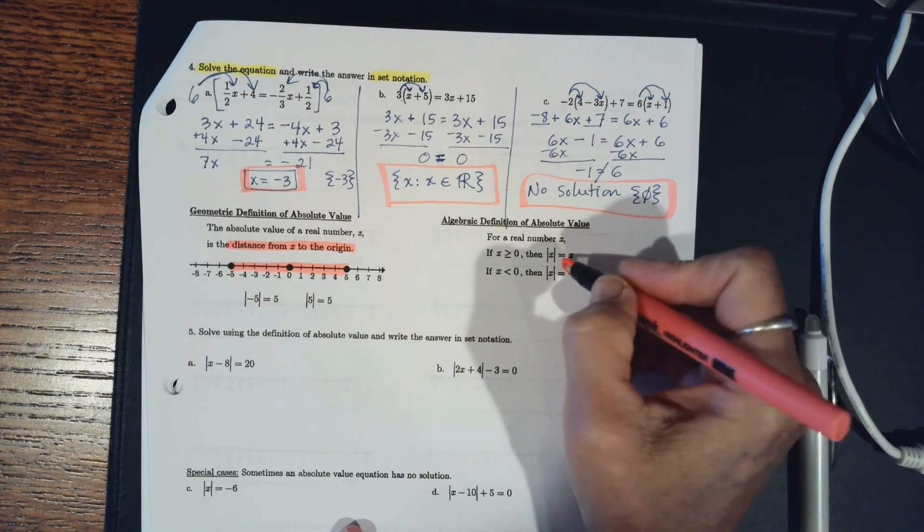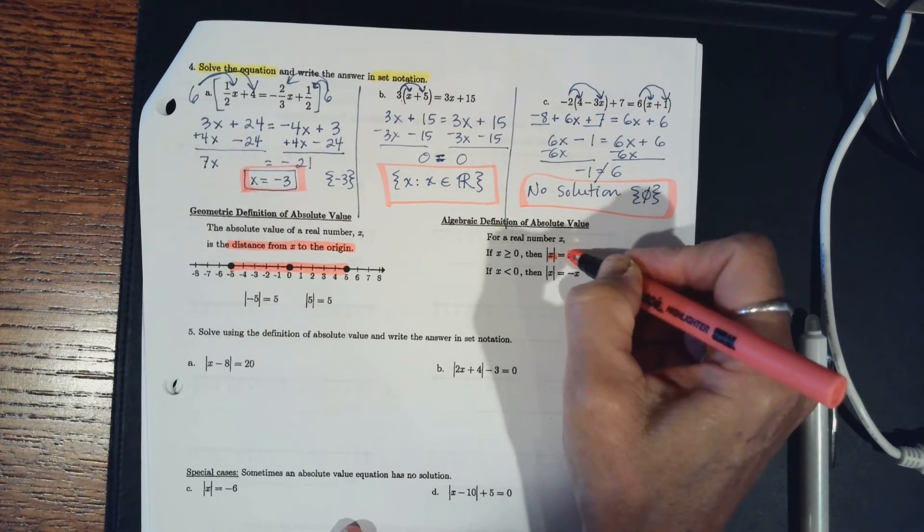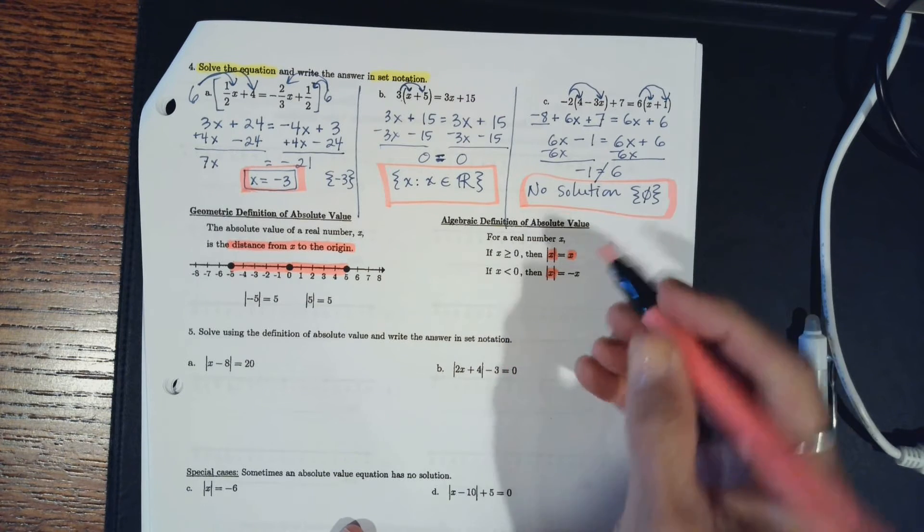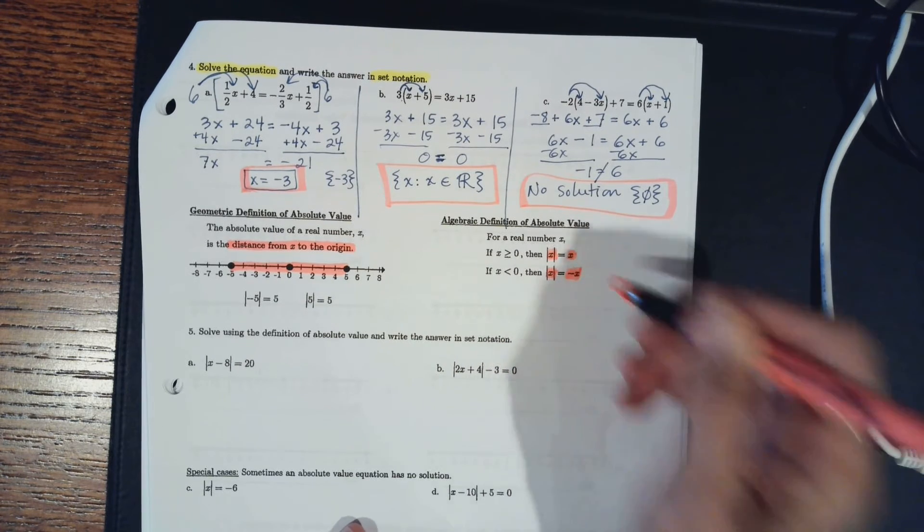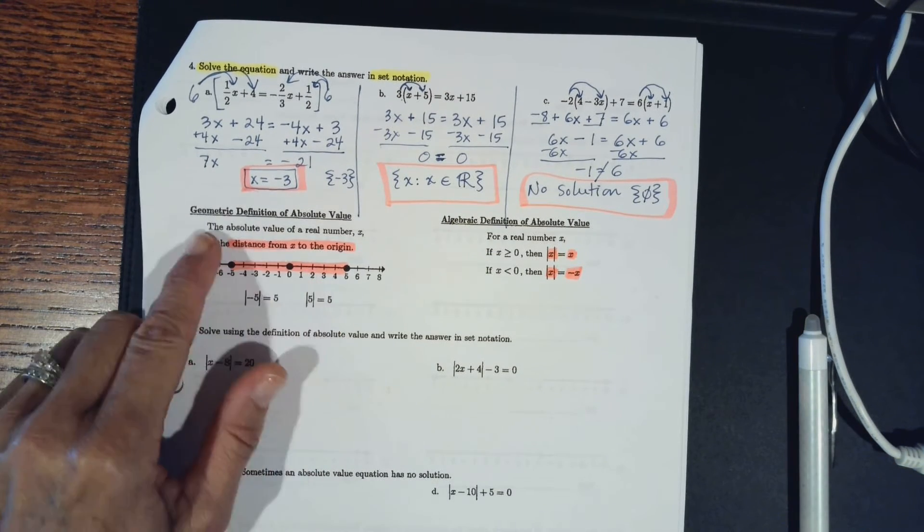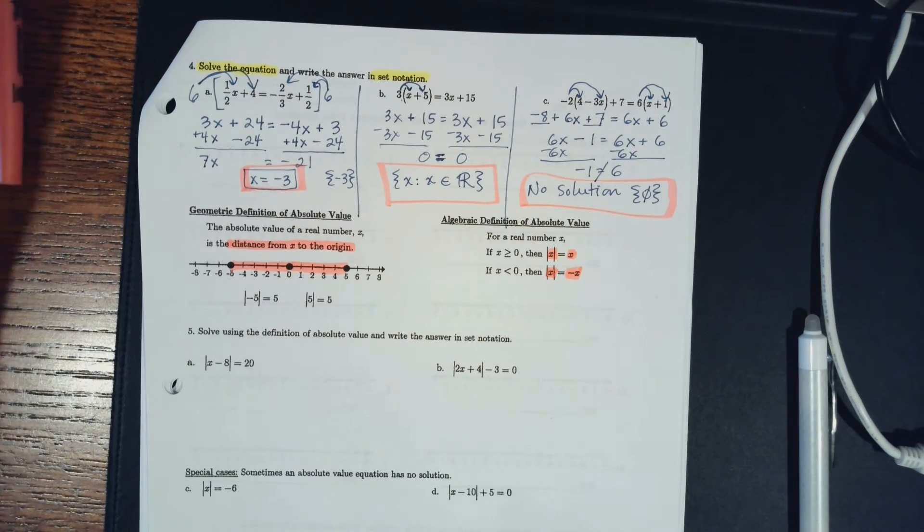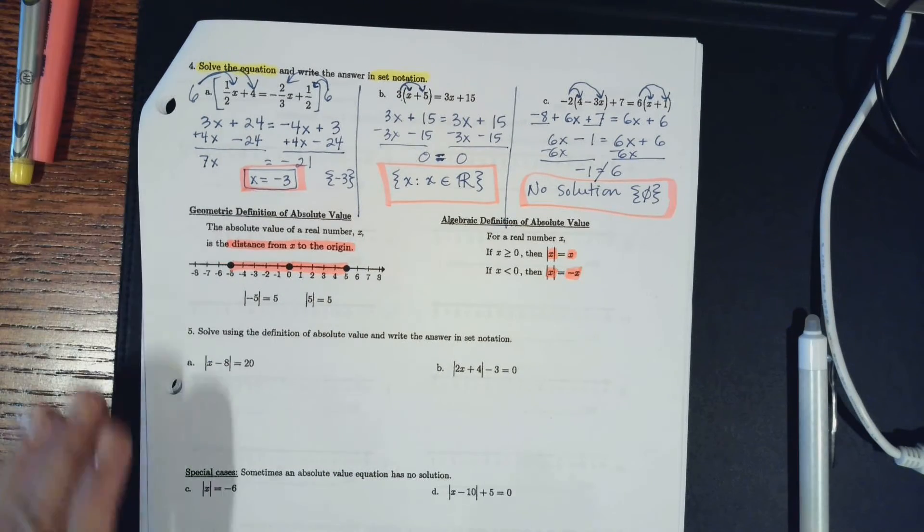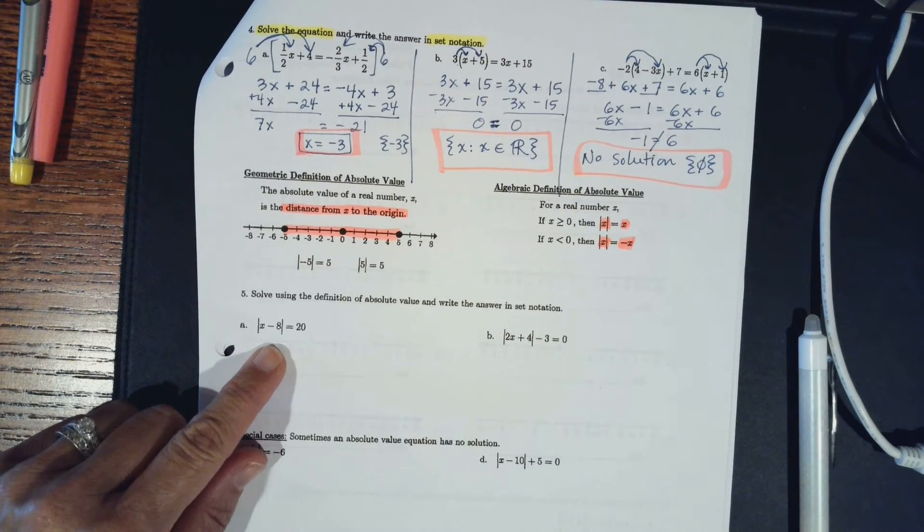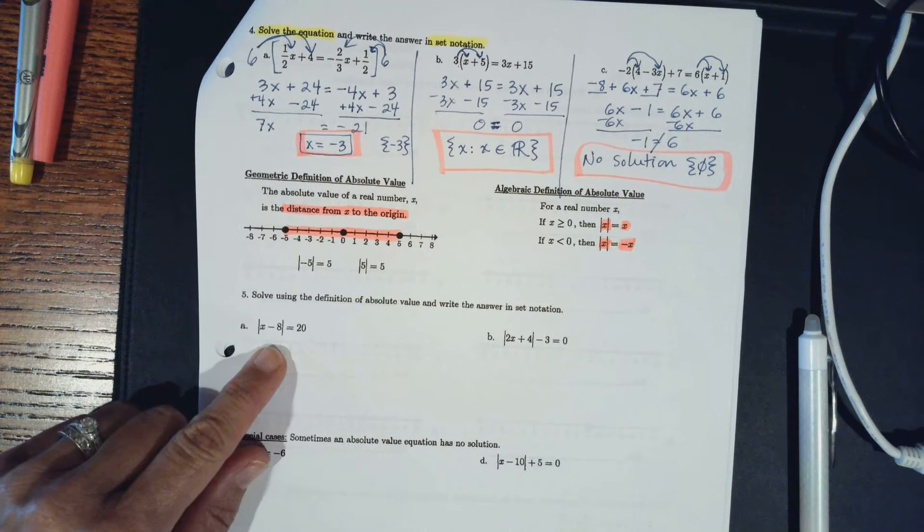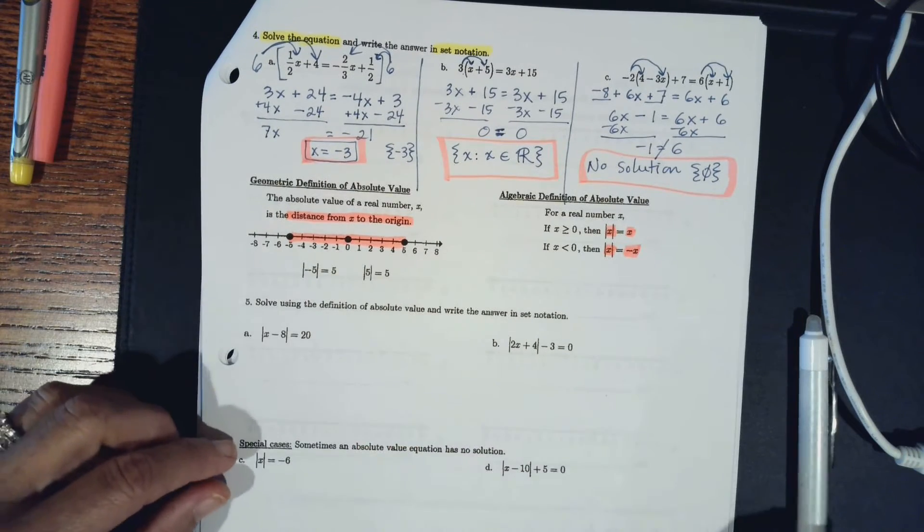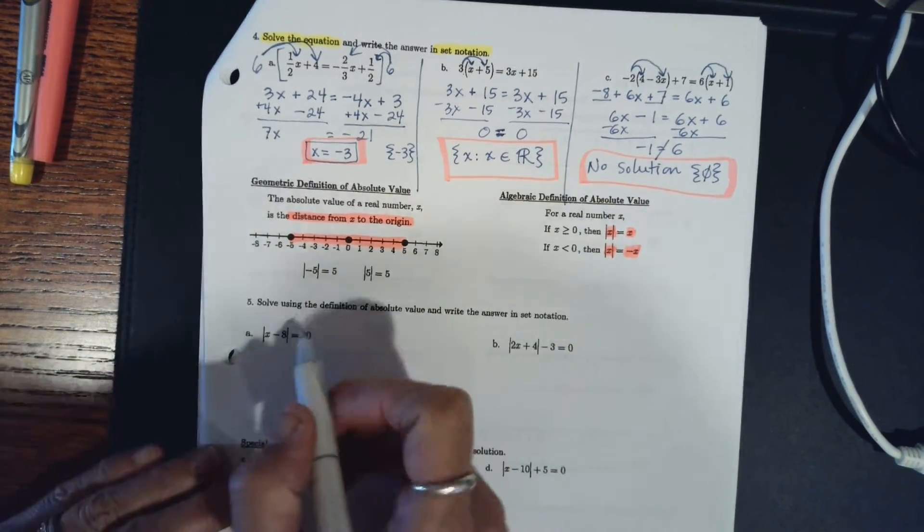What those bars are referring to is a distance from zero. Algebraically speaking, if it is positive it's exactly the same value, but anything you have in here that's negative, if it's less than zero, you also have a negative possibility. You can have two possibilities. If you have a problem like this, absolute value of x minus 8 equals 20, then you have two possibilities.